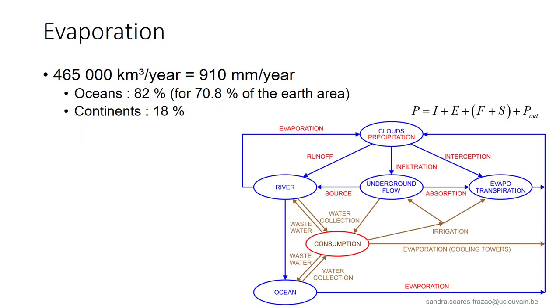Evaporation constitutes a significant loss of water. It represents, on average, 910 mm per year. That is to be compared to the average annual precipitation in Belgium, about 850 mm.